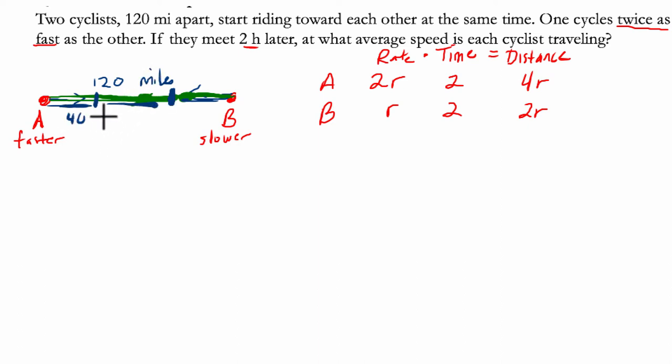And then we can cut up 120 into thirds. All right. Well, that's 40, 40, and 40. So A will have traveled 80 miles and B, 40.